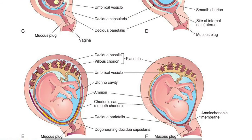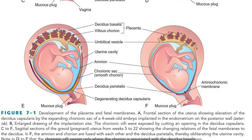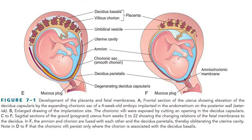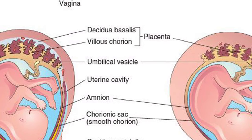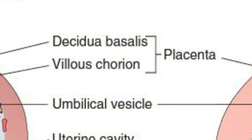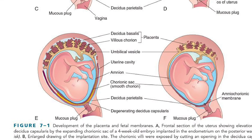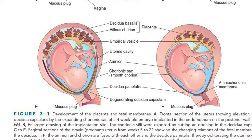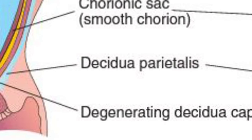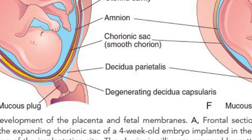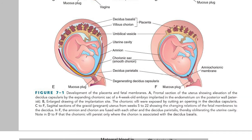Looking at the figure, you can understand that the placenta is made up of two things: the decidua basalis and the chorionic villi. This one here is the decidua parietalis — follow the arrow and you will get the idea.